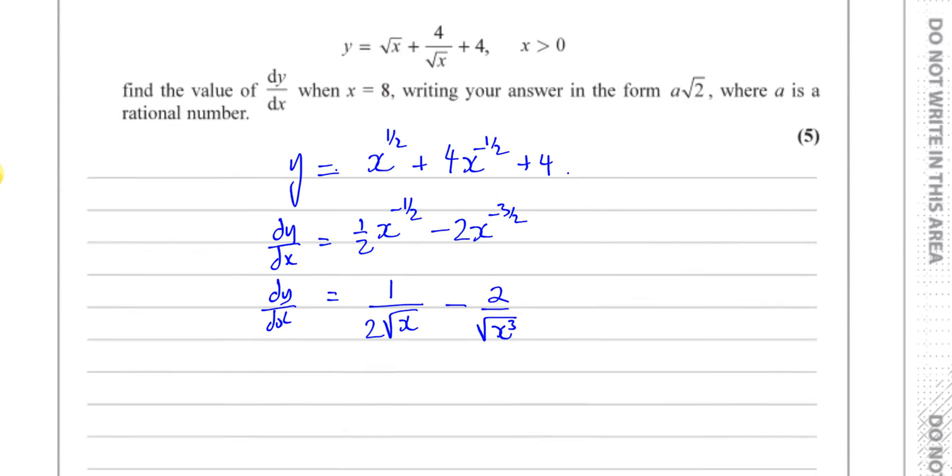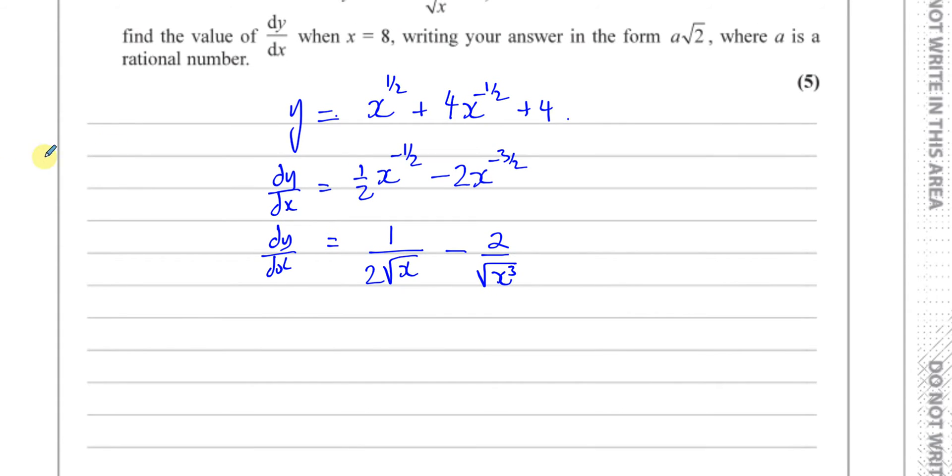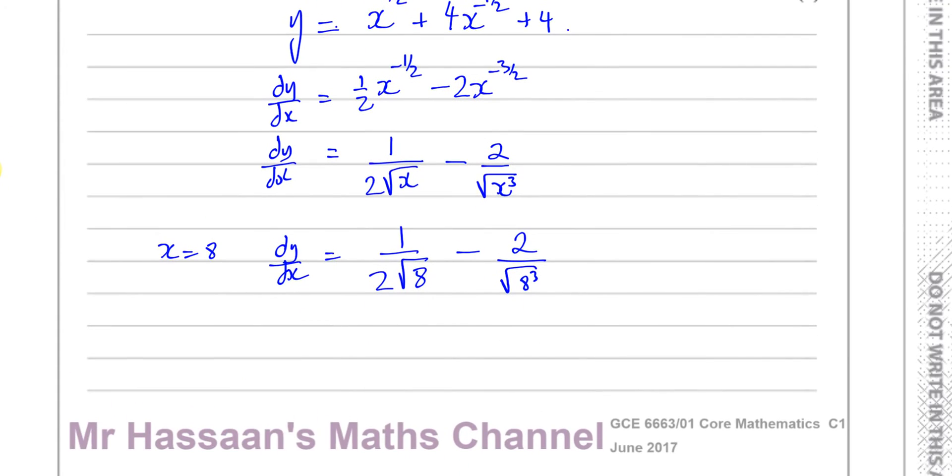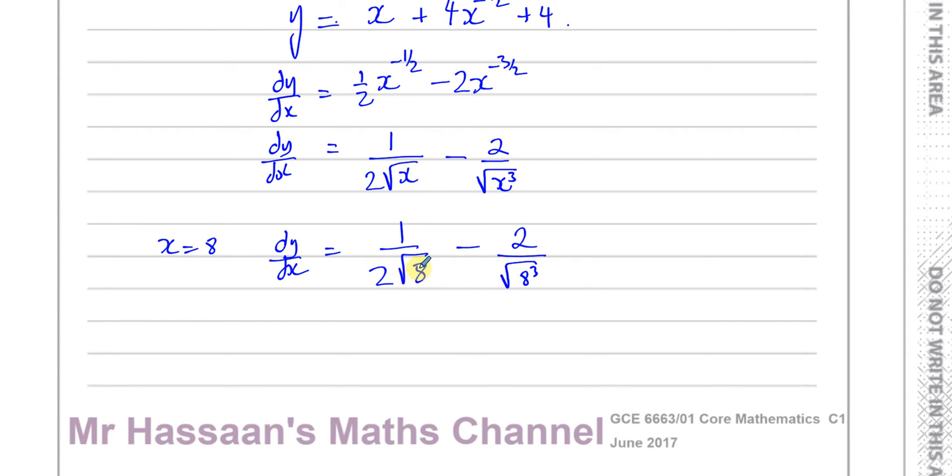Now we've got to find dy/dx when x equals 8. So I've got to put x equals 8 into this expression here. So when x equals 8, dy/dx is 1 over 2 times the square root of 8 minus 2 divided by the square root of 8 cubed. Now I want to write this in the form shown here. So we have to write it in simplified surd form. Now in order to do that, I've got to write this in a bit of a simpler way.